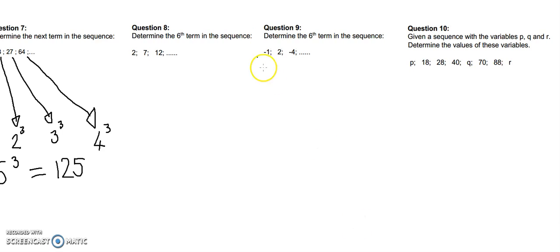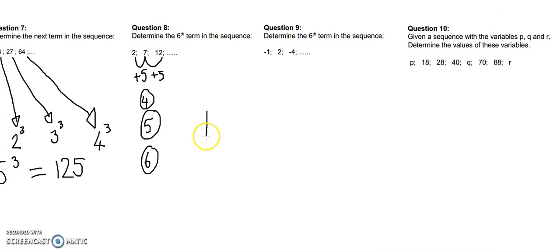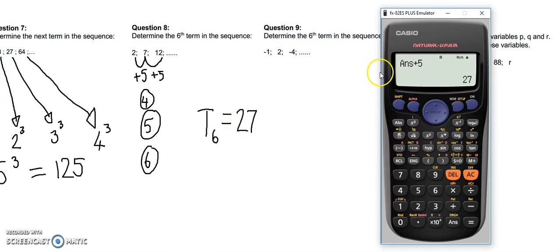The next question. Determine the sixth term in the sequence. Let's look at it. Two to get to seven, we're adding five. From seven to twelve, we're adding five. So now we've got to do the fourth term, the fifth term, and the sixth term is what we're actually looking for. So I'm going to get out my calculator and start with twelve plus five to get to my fourth term, plus five to get to my fifth term, and plus five to get to my sixth term, which means T six is equals to twenty-seven.